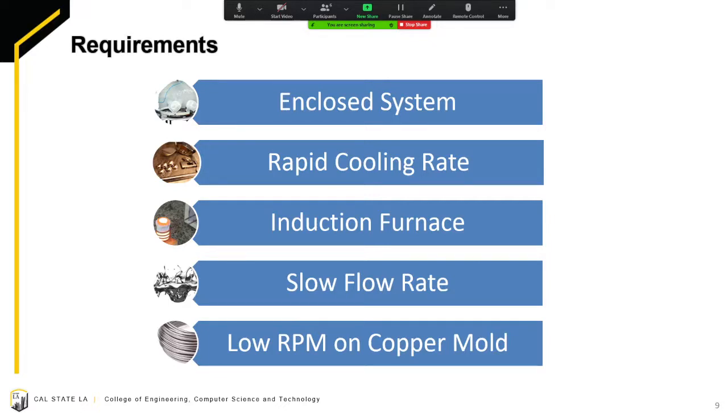You cannot use conventional ways to melt bulk metallic glass as it will require the use of oxygen, so an induction heater which generates varying magnetic fields heats metallic objects without the use of oxygen. It was also required to use a slow flow rate. Ideally, we want a laminar flow of the molten bulk metallic glass to minimize splashing and to have control as it lands on the copper mold. Lastly, we required a low RPM on the copper mold. This helped the molten BMG stick to the copper mold as it vitrified and to not overheat the copper mold.